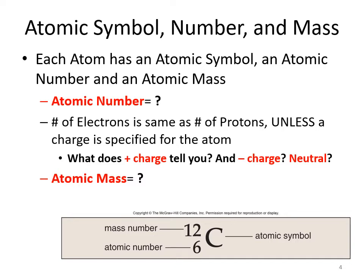If instead you're told that an atom has a negative charge, that means it has more electrons. A negative one charge means it has one extra electron. So in the example of carbon, instead of six electrons it would have seven. If carbon has a minus two charge, that gives it two extra electrons, so it would have eight electrons. If any of that is unclear, just send me a message and I will give you a little extra practice.